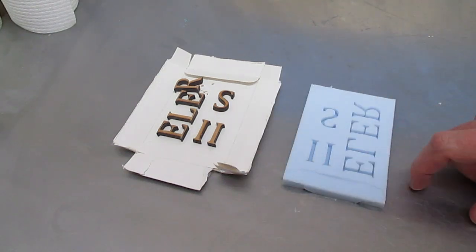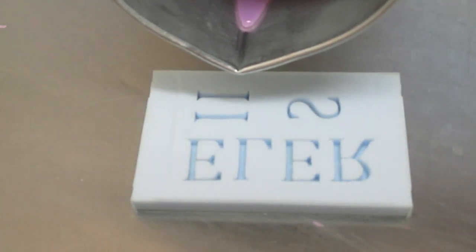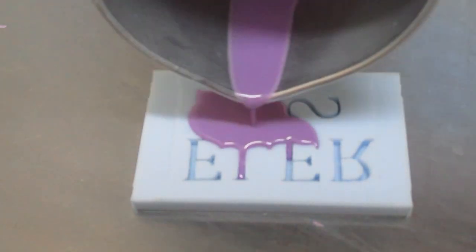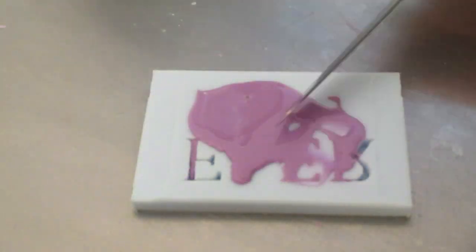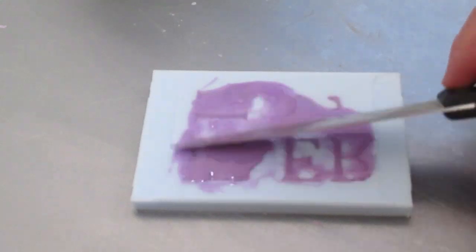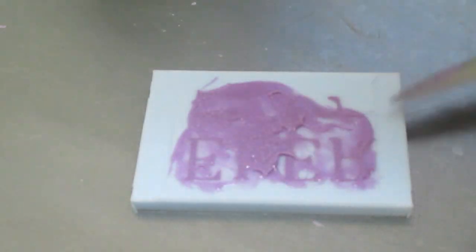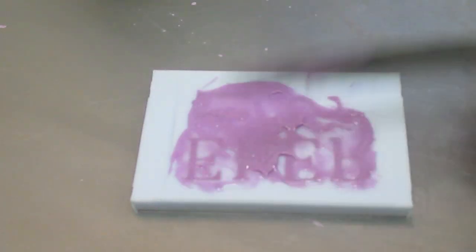So I'm going to melt down some soap and I'm going to pour it into the mold to see how it looks when it's finished. This is purple and it's unscented. I'm just going to pour it in here and see how we go. You might think, why have I filled it over the top? Because once it sets, I can actually get the knife again and then scrape it back off and I'll have a flush face to each of the letters. That's the plan anyway.